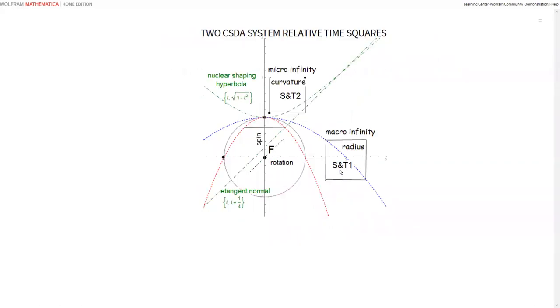So, I work two CSDA, relative CSDA space and time squares. S and T2 is for micro infinity, realm of curvature, quantum small. And S and T1 is for macrospace, radius of curvature. Note, two dependent parabola curves, one red and one blue, unify one spin and rotation axis across both infinities.